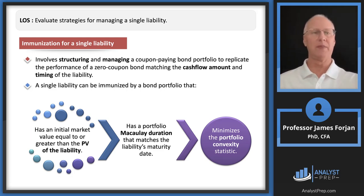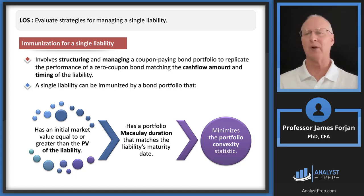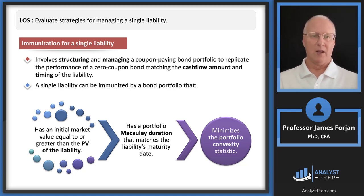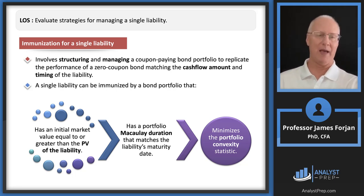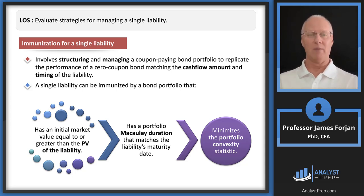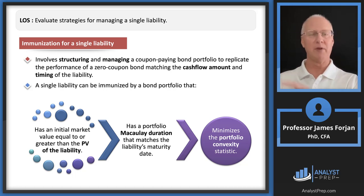For a single liability, immunization involves structuring and managing bonds so the Macaulay duration matches the liability's maturity date. For example, to fund a $100,000 swimming pool in 10 years, I could buy a zero coupon bond maturing in 10 years, perhaps for $80,000 today. No coupon payments for 10 years — the bond smoothly rises in price as it approaches maturity, and on the maturity date the issuer pays me $100,000, which I hand to the construction company.